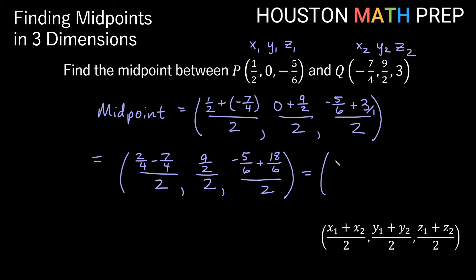We'll go ahead and get negative 5 fourths over 2, comma 9 halves over 2 still, and here we'll have 13 over 6 over 2.